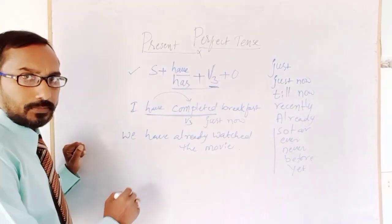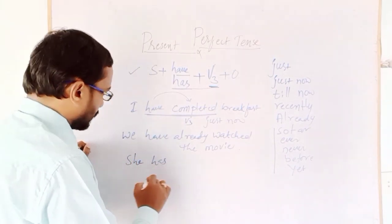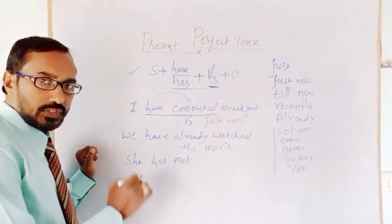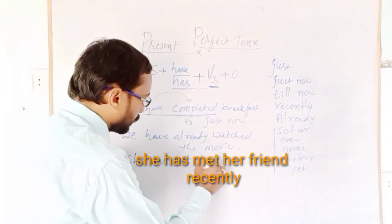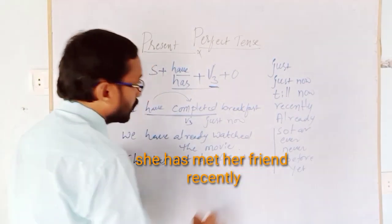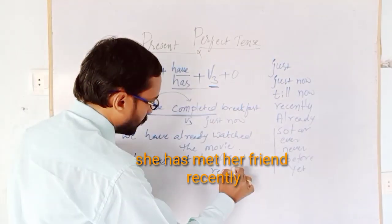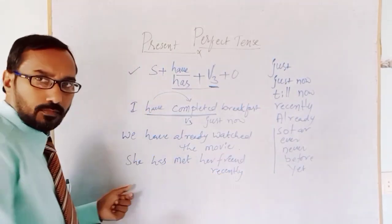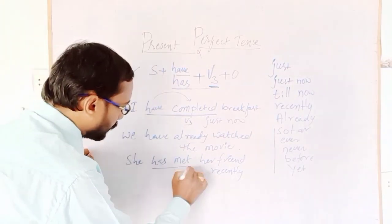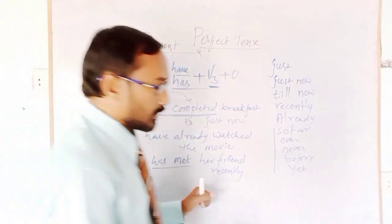One more example: She has met her friend recently. You can see she has met her friend recently — 'has met' follows the have/has plus V3 structure.